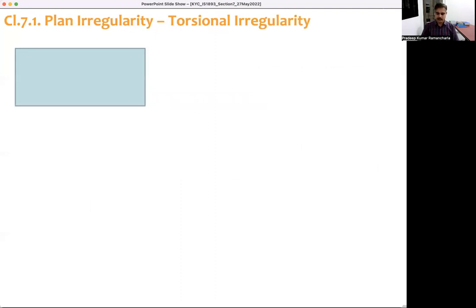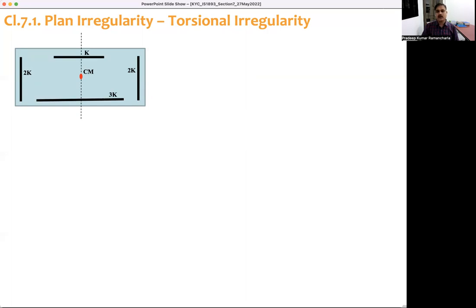Consider a simple plan where mass is evenly distributed, so the center of mass is at the geometric center. Along the Y-axis, stiffness is 2k on the right and 2k on the left, so the center of stiffness lies on the central dotted line. Along the X-axis, stiffness is k on one side and 3k on the other, so the center of resistance is not at the center. When the inertia force acts at the center of mass, the building will twist in the clockwise direction.